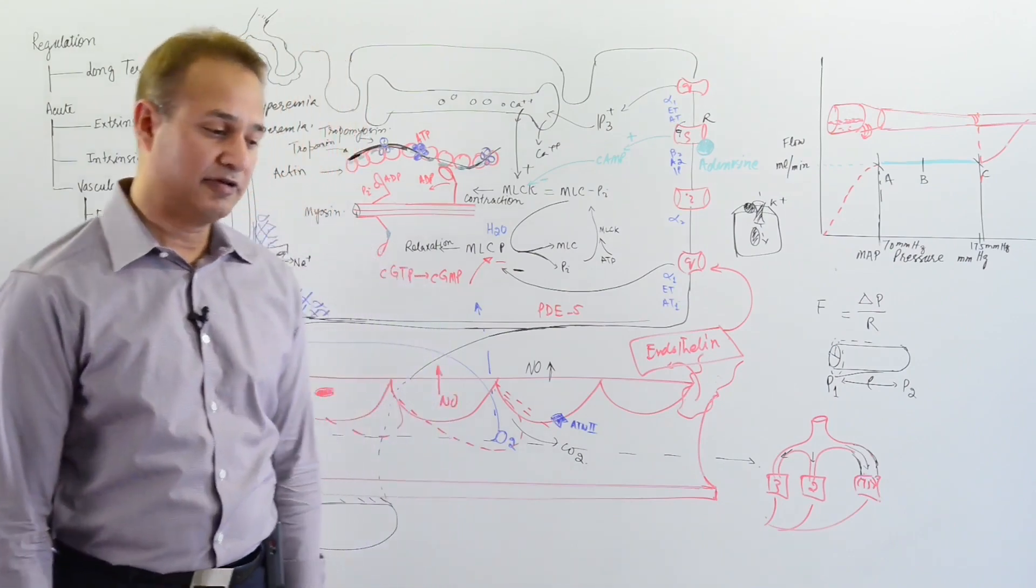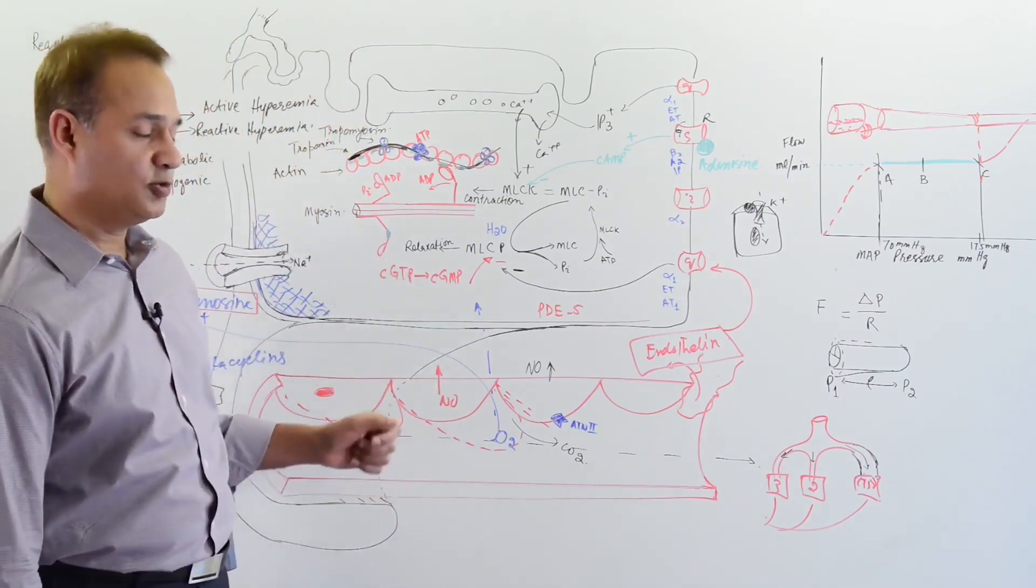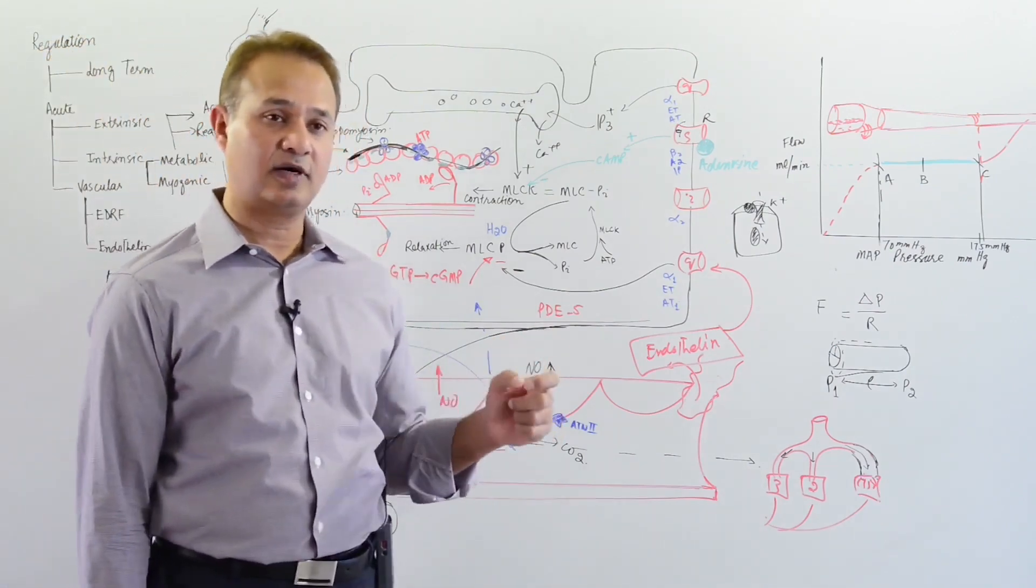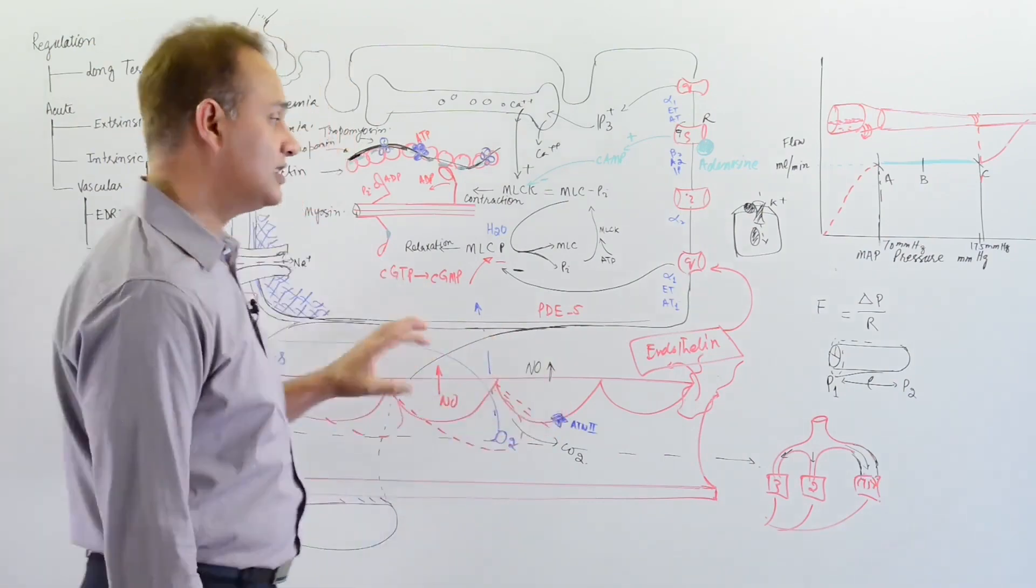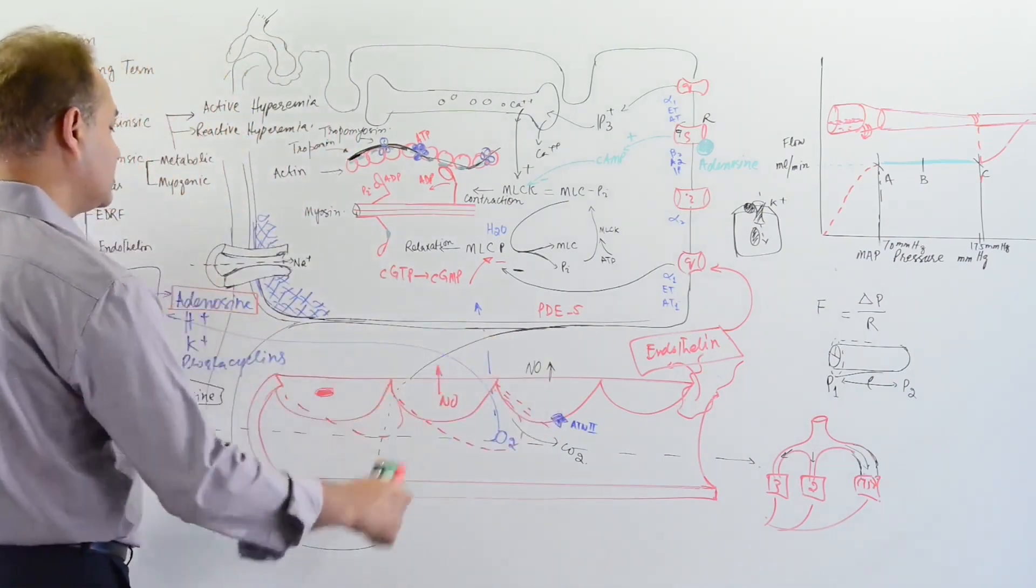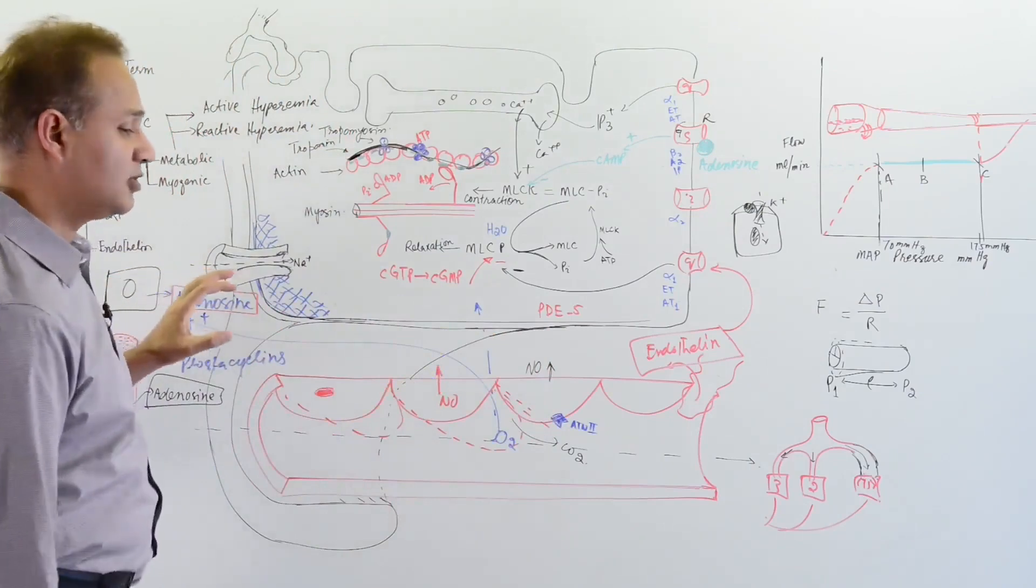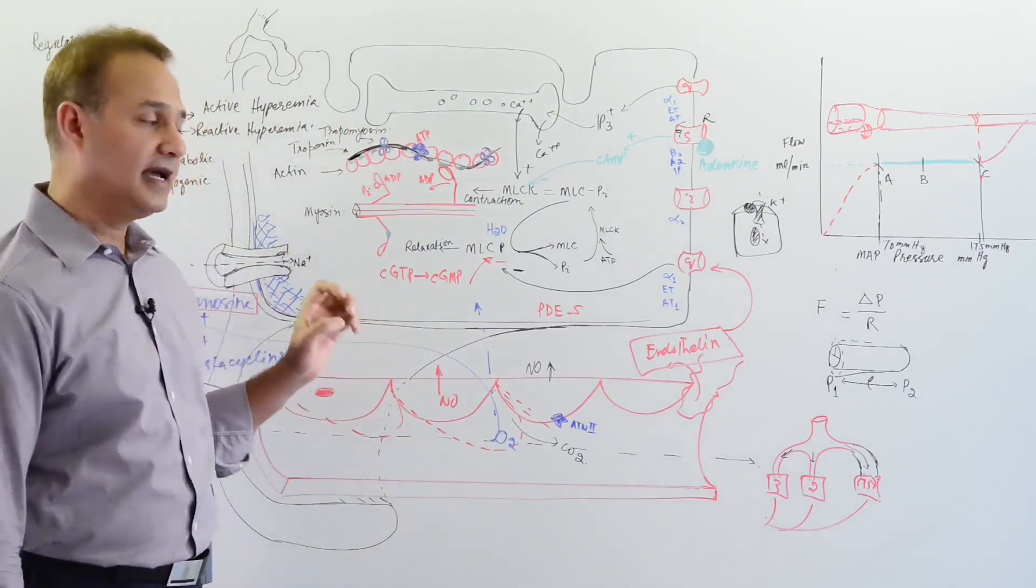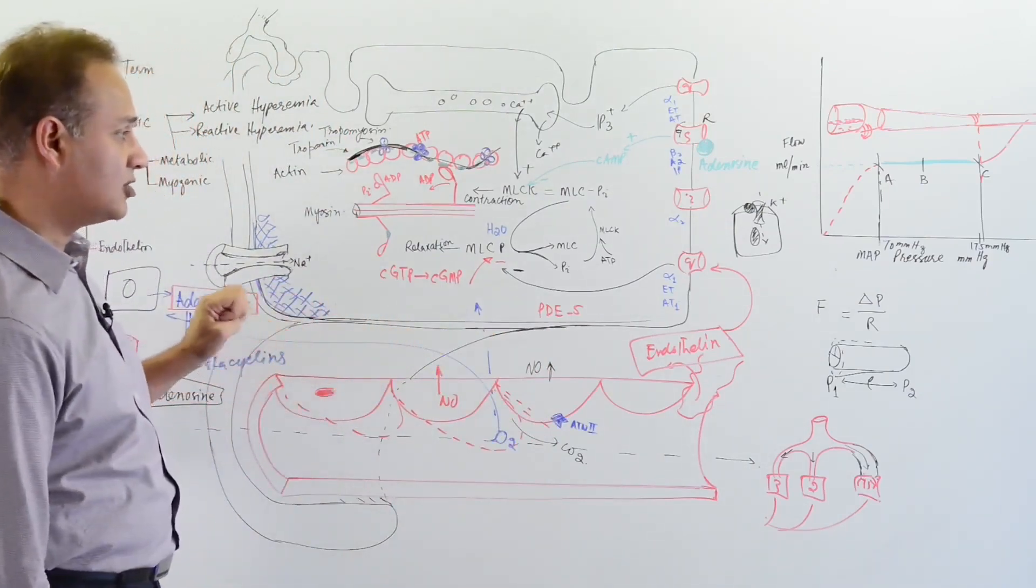Hi guys, this is Mubeen. We are talking about the cardiovascular system. The lecture today is a brief one about nitric oxide. We just finished a lecture on auto-regulation where we talked about nitric oxide, so let's go a little deeper into the way nitric oxide works.